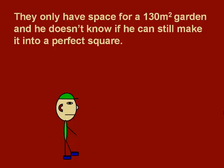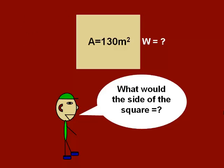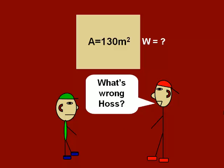They only have space for a 130 square meter garden and he doesn't know if he can still make it into a perfect square. What Haas needs to be able to find out is the width of a square that has a non-perfect square area.